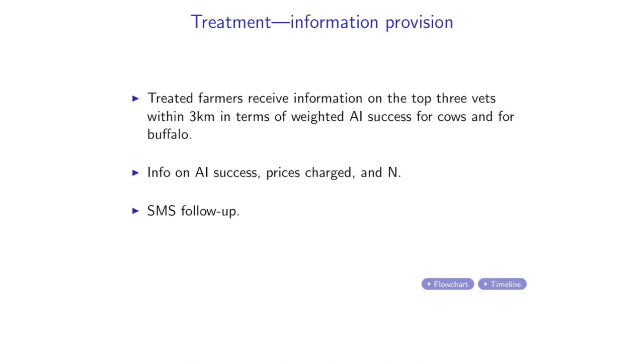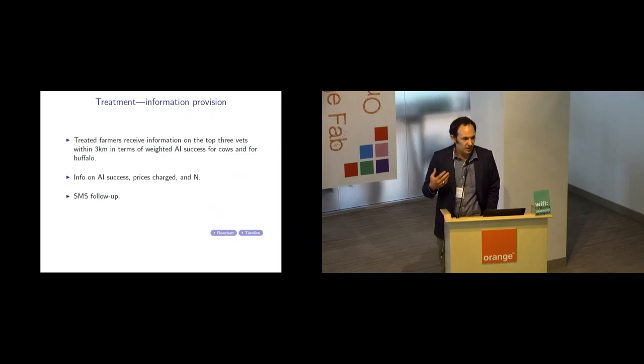For each of these veterinarians, they were given information on the average AI success rate, the average price charged by this veterinarian—so this is a setting where vets are allowed to charge a price to show up because they have to travel to farms—and the number of observations that went into these two averages. So these are akin to the same three pieces of information you'd see in most rating platforms if you go look for a local business or service provider.